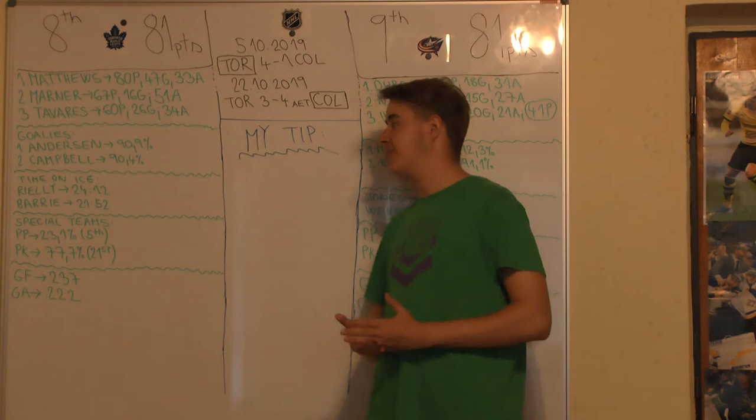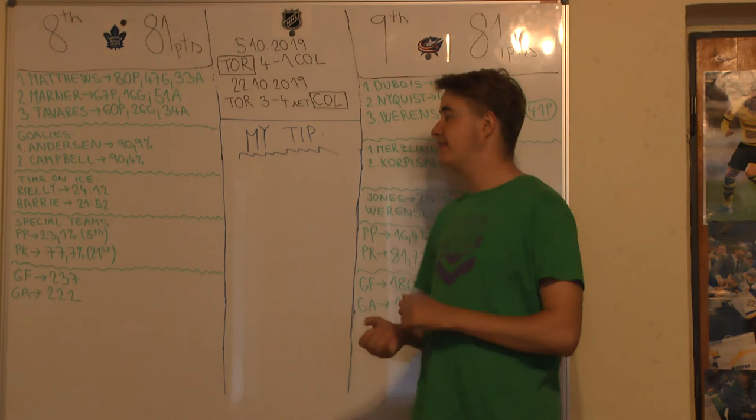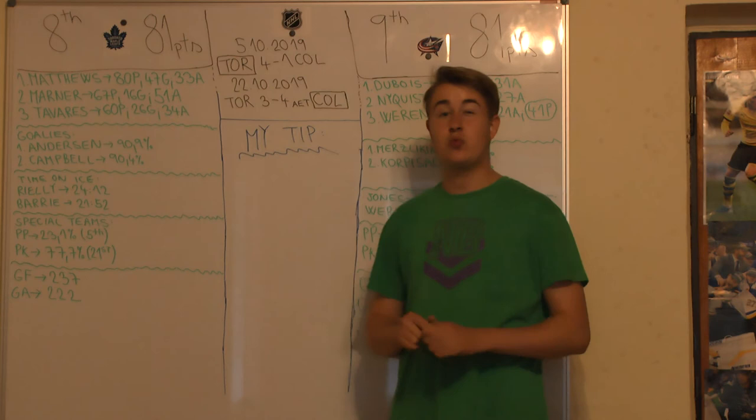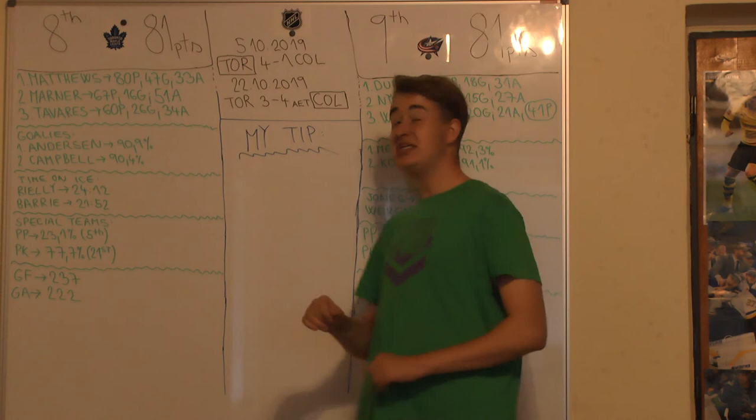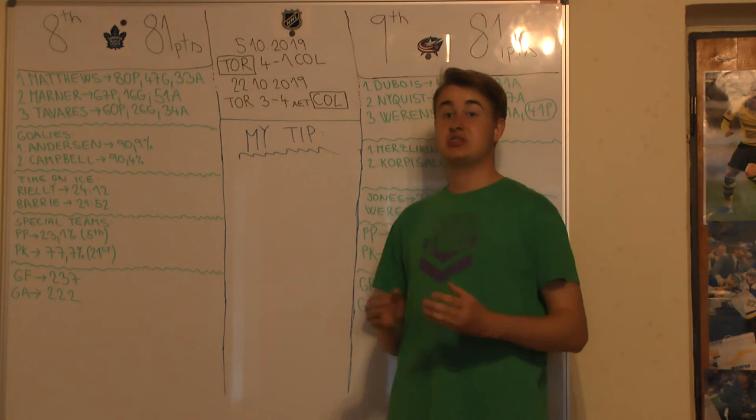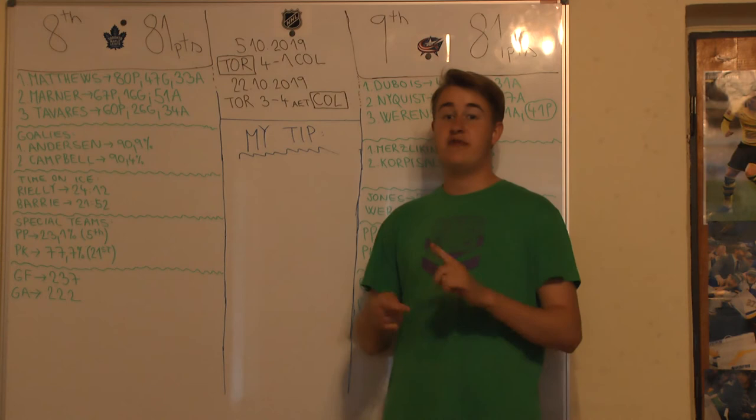Time on ice leaders, two defensemen. First one, Morgan Rielly with 24 minutes 12 seconds averaging per game. And number two, Tyson Barrie, who was acquired in a trade with Colorado Avalanche earlier this season, 21 minutes 52 seconds averaging per game. So definitely those two very important. We know that Morgan Rielly was injured, he broke his bone, so very unfortunate. But Rielly should be back I believe for Toronto Maple Leafs, another very big plus for Toronto out there.